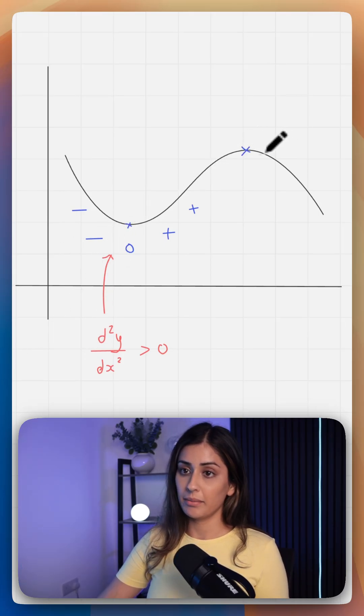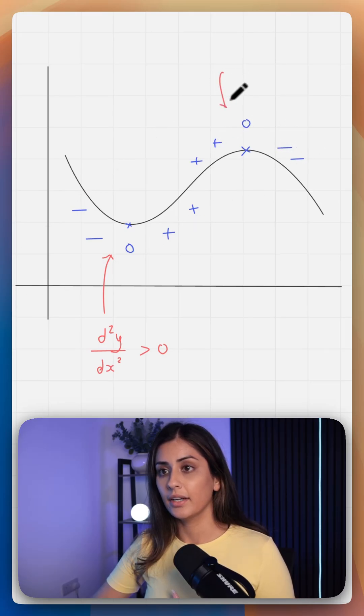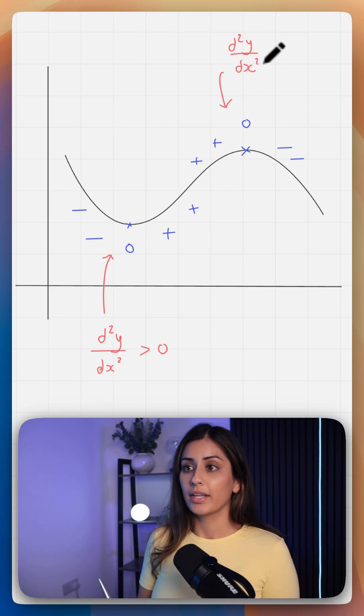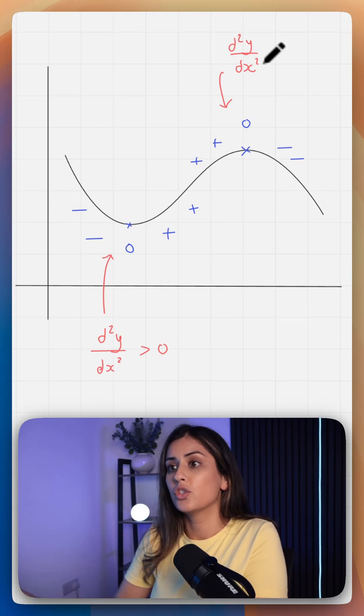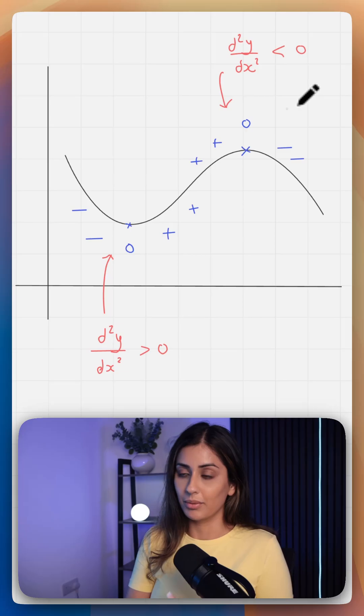Similarly, here you have a maximum point. Your gradient is changing from positive to zero to negative. So here your second derivative, your d squared y by dx squared, is measuring the change in your gradient. Your gradient is going from positive to negative and therefore it's less than zero at your maximum point.